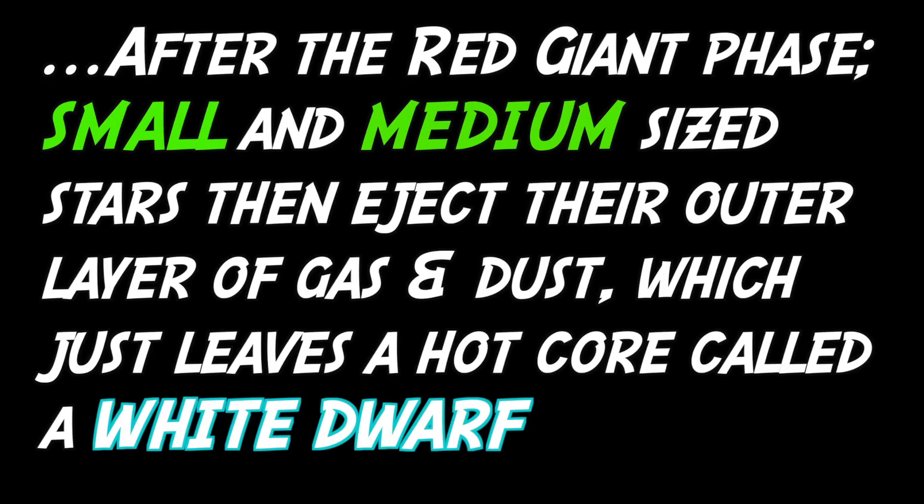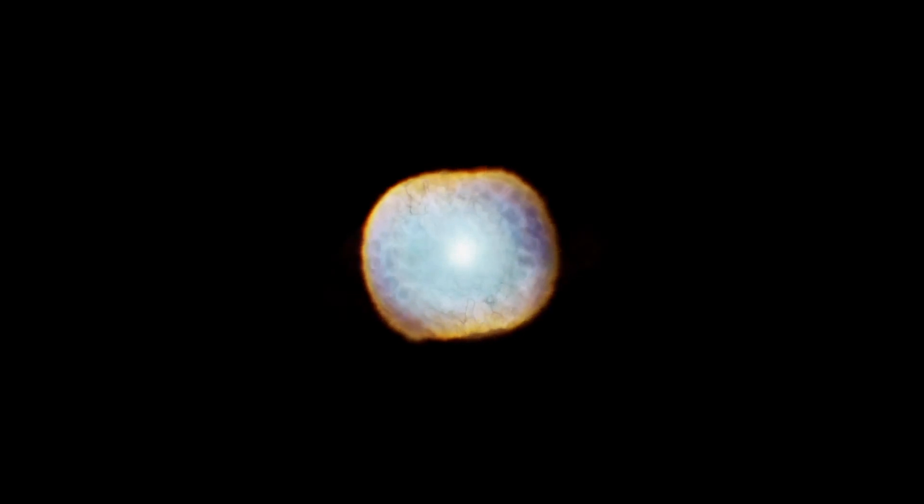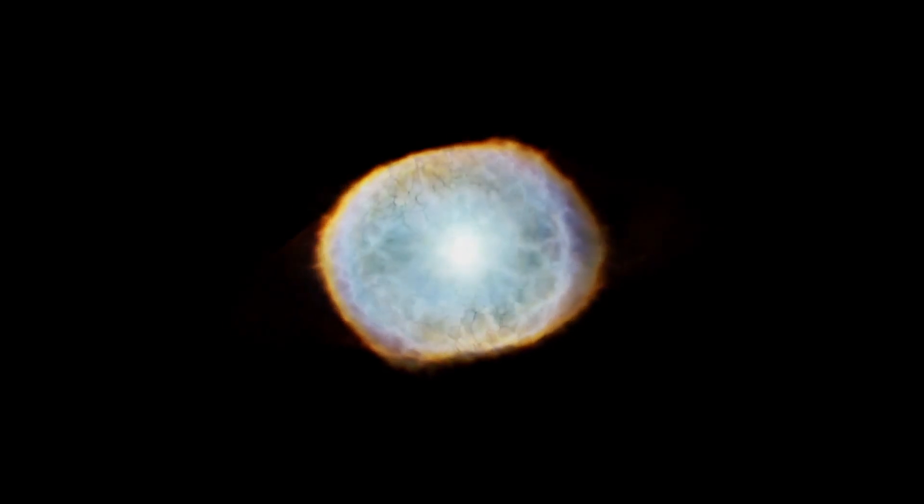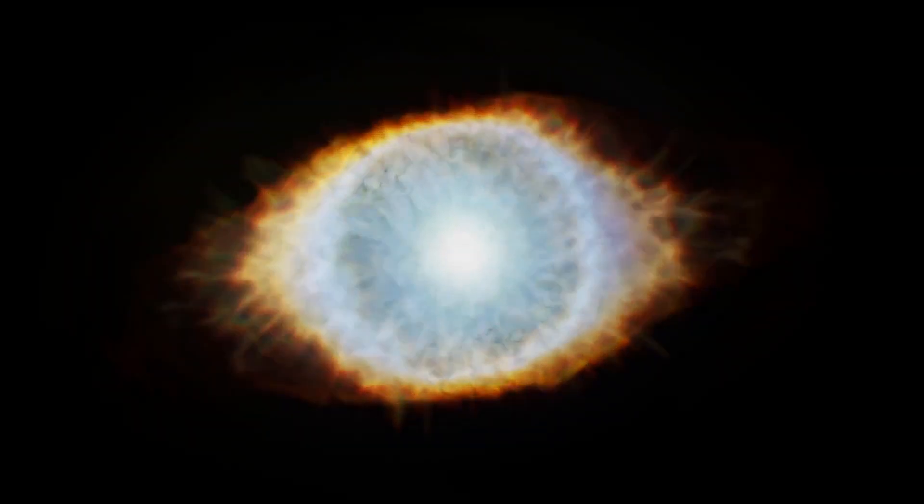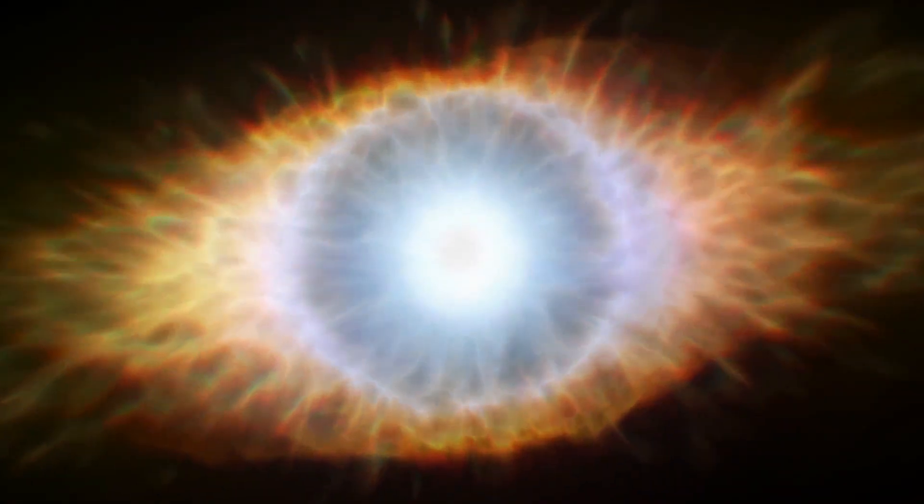After the red giant phase, small and medium-sized stars eject their outer layer of gas and dust, which leaves a hot core called a white dwarf.